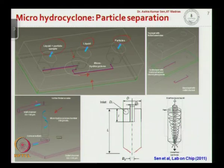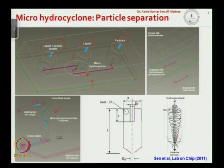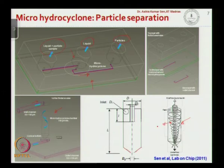The hydrocyclone consists of a cylindrical chamber with a frustoconical bottom. The sample is injected tangentially so it takes a helical path going down. Due to centrifugal force, particles go towards the wall, and to satisfy mass conservation, pure liquid comes towards the center. The particles spiral outward and downward, while the pure liquid spirals upward toward the center, achieving separation of particles from liquid.